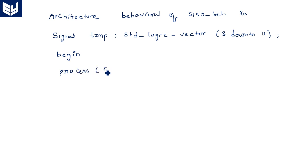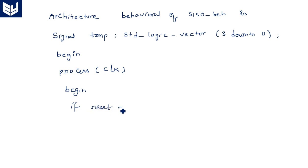The process is sensitive only to the clock, because data changes only on a clock event — so the sensitivity list contains only clock. Process begin: if reset is equal to 1, then s_out is assigned zero. Reset equal to 1 means whatever output is available it should be forced to zero.